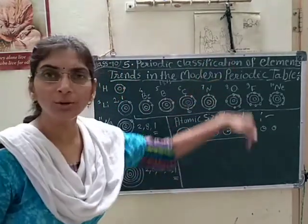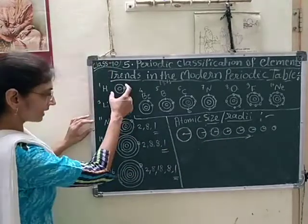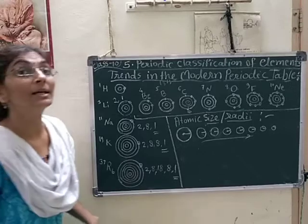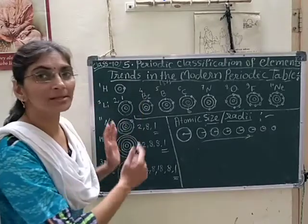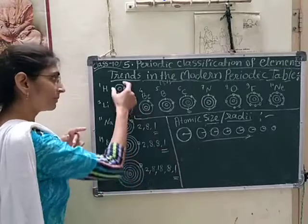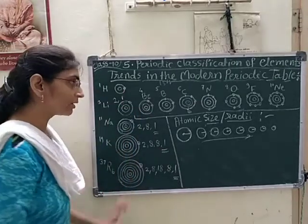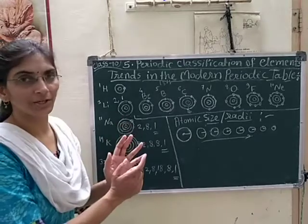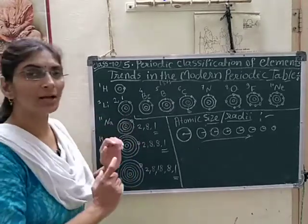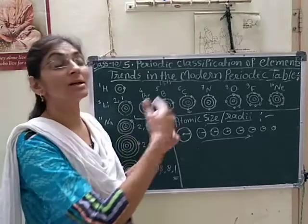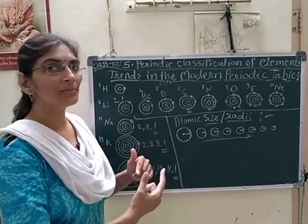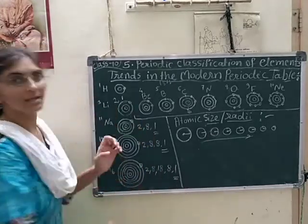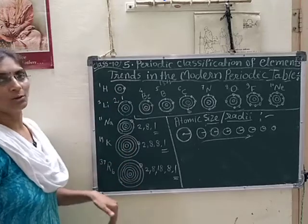But along the group, the atomic radius increases. The number of orbits get increased here along the group. And also the force of attraction — the nuclear force, that is the force of attraction of nucleus towards the outermost electron, towards the valence electron — is decreased here along the group.